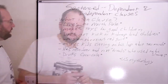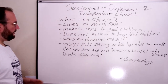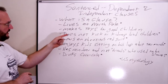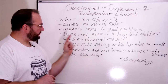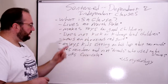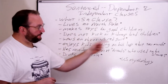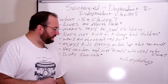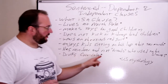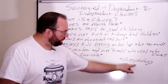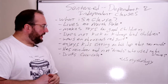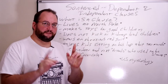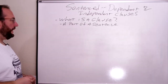So the first thing to ask is: what is a clause? A clause lives at the North Pole, makes toys for good children, does not kick or kidnap bad children, wears an obnoxious red suit, enjoys kids sitting on his lap a bit too much, has reindeer and not friends, and drinks Coca-Cola. All of these things are of course from U.S. mythology — I have just completely talked about Santa Claus and not sentence clauses. That was my mistake.